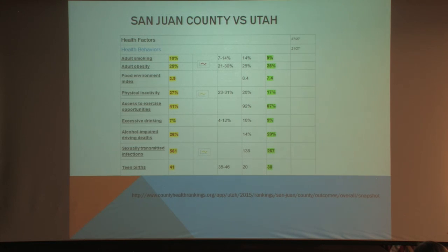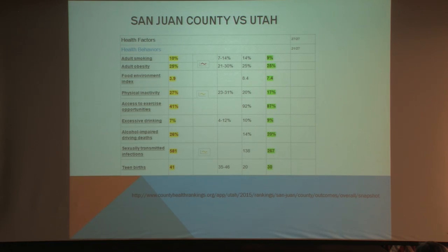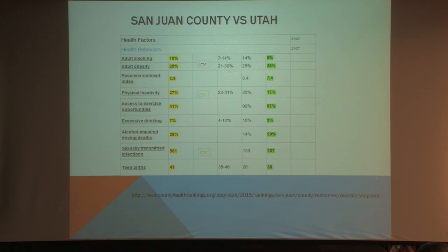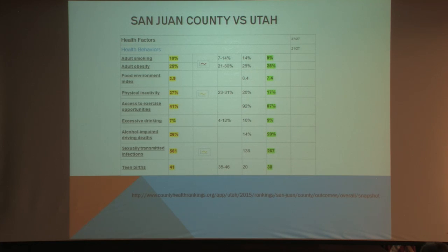Food environment — the food index is lower there. When I drove around throughout San Juan County in the more rural areas, there just weren't any restaurants, any sit-down places. It's usually small convenience stores, and I can't really find anything to eat. No grocery stores. Access to exercise opportunities — excessive drinking is just slightly lower, not a big difference, which also surprised me.